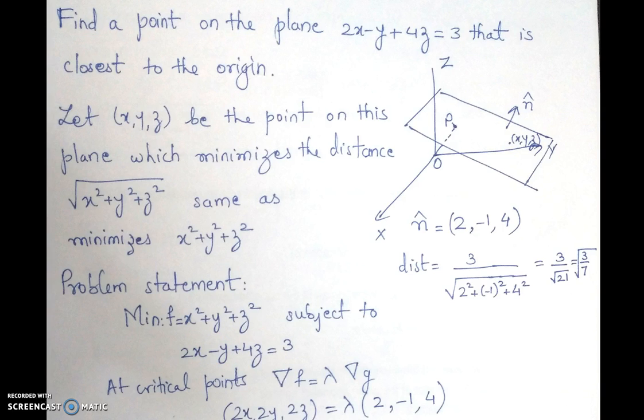Now we all know that at the critical points the gradient vectors are parallel. So let us see the grad of f as lambda times grad of g.